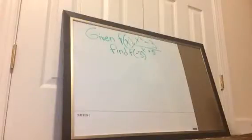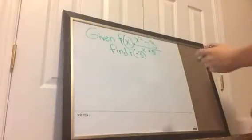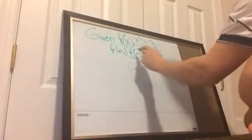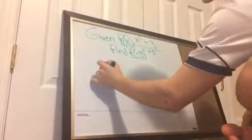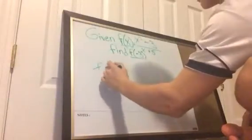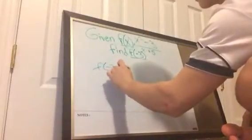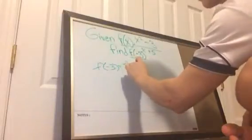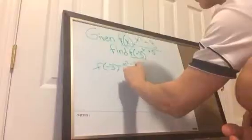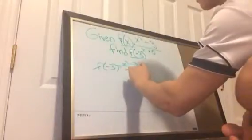To solve this equation, what you do is substitute f of negative 3 for f of x. So your problem would look like f of negative 3 equals x squared minus 3 over x plus 5.